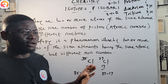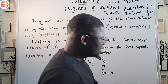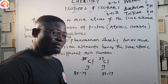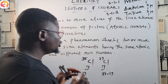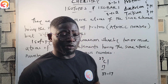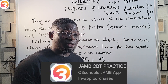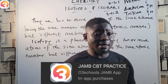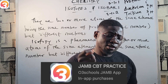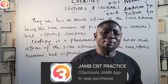Chlorine-35 has 35 minus 17 = 18 neutrons, while chlorine-37 has 37 minus 17 = 20 neutrons. So these are isotopes — same atomic number, different mass number. Whenever you see a question about isotopy, you know what it is about. You can also use the question search feature on the Otter School JAM app to search for past questions on isotopy.